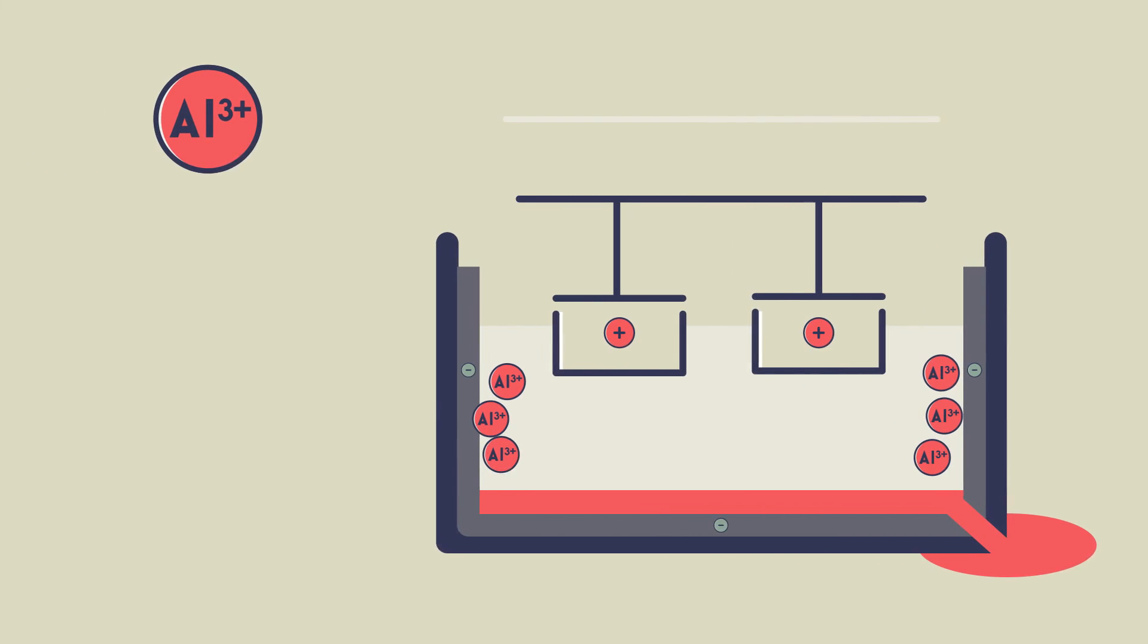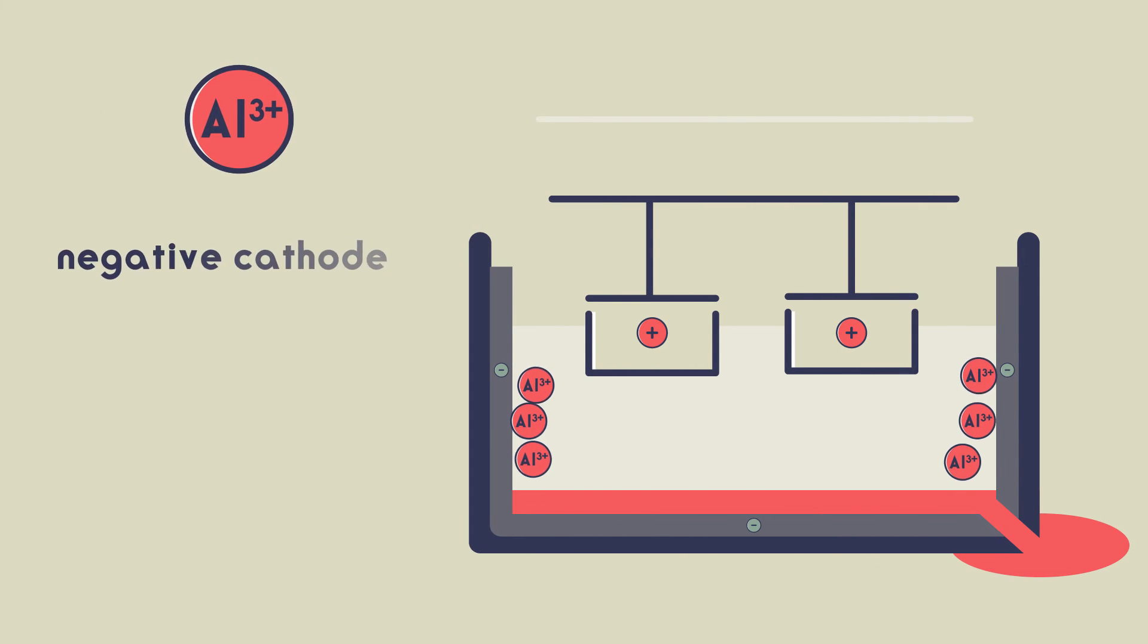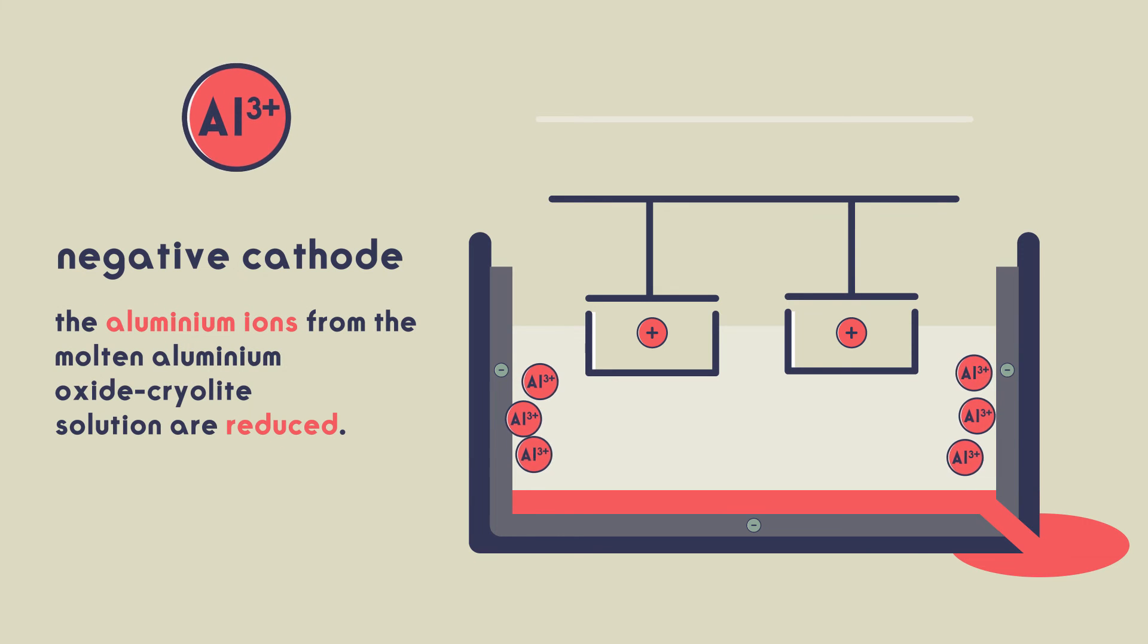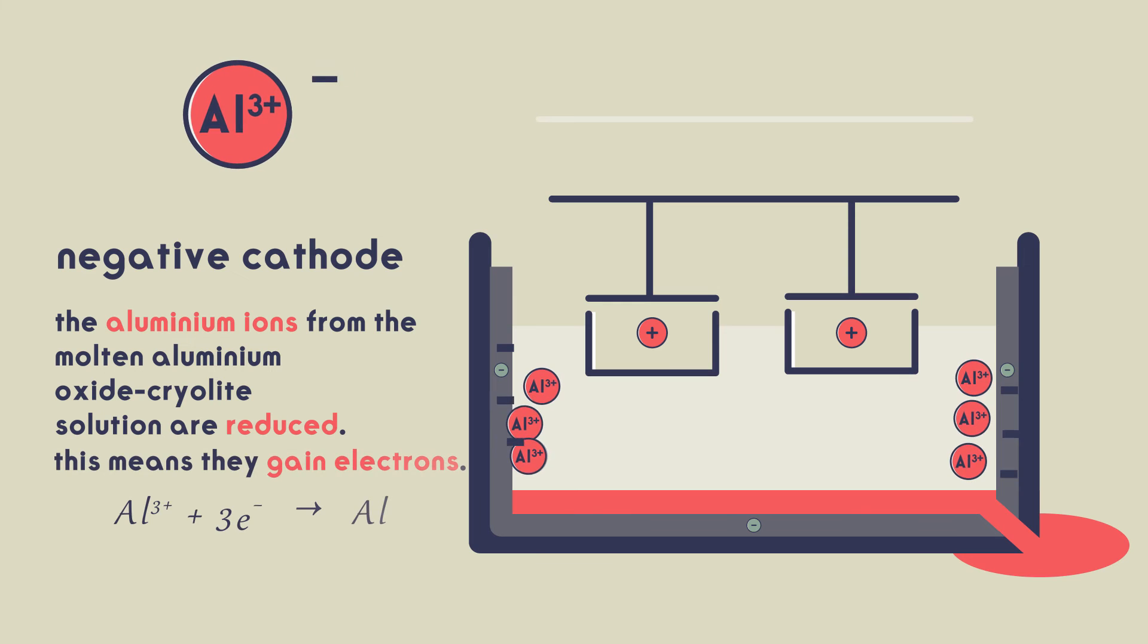Let's have a quick look at the reactions at the electrodes. At the negative cathode, where the aluminium forms, the aluminium ions from the molten aluminium oxide cryolite solution are reduced. This means they gain electrons.